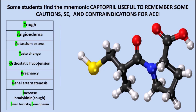Continuing the CAPTOPRIL acronym: R is for renal artery stenosis — ACE inhibitors are contraindicated with narrowing of the renal arteries. I is for increased bradykinin, as discussed. L is for liver — pro-drug ACE inhibitors requiring hepatic activation should be avoided in liver failure, and ACE inhibitors can also cause liver toxicity. Finally, ACE inhibitors can cause agranulocytosis or leukopenia — a reduction in white blood cells — making patients susceptible to infections such as sore throat.